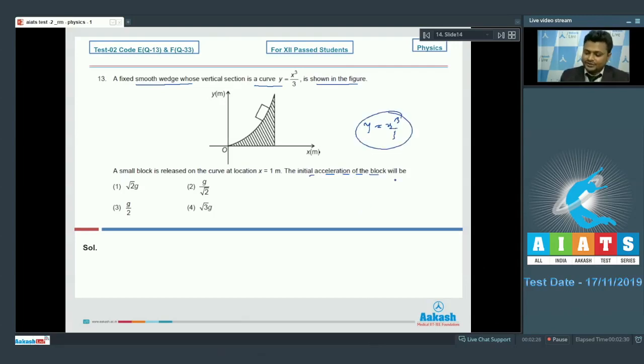Now y equals x cube by 3. From here we can calculate the slope of the curve first of all. So slope, that is dy by dx, can be given as x square. Let us calculate the slope at the given instant. So slope dy by dx at x equal to 1 can be given simply by 1.